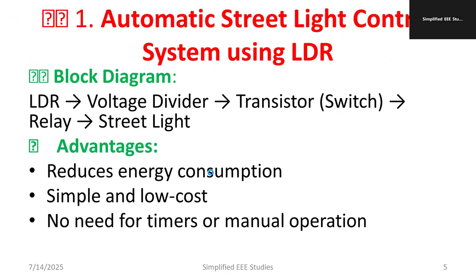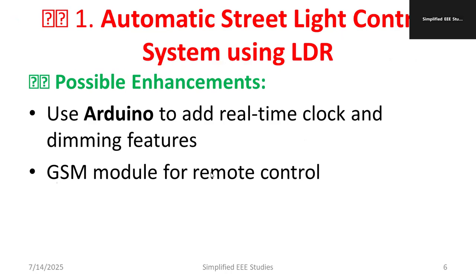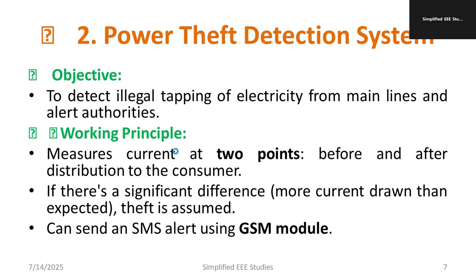The major advantages of this project are reduced energy consumption, simple and low cost design, and no need for a timer or manual operation. Possible enhancements include using Arduino to add a real-time clock and dimming features for brightness control, and even adding a GSM module for remote control. The total budget is within 400 to 600 rupees.